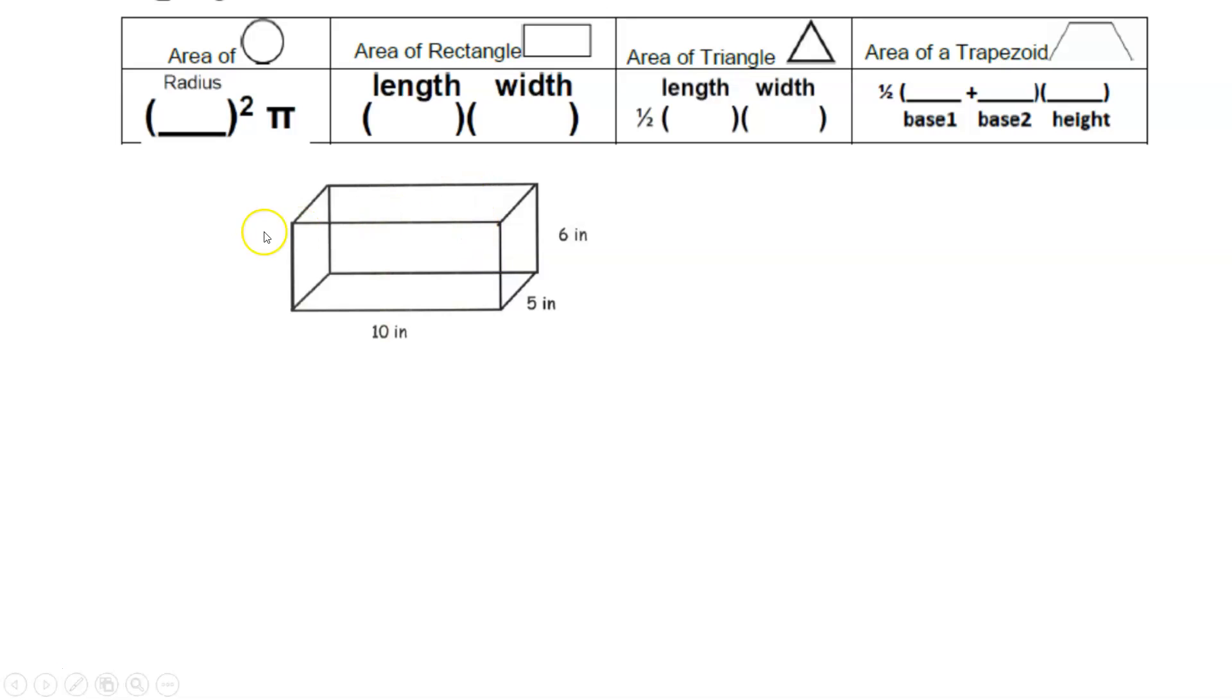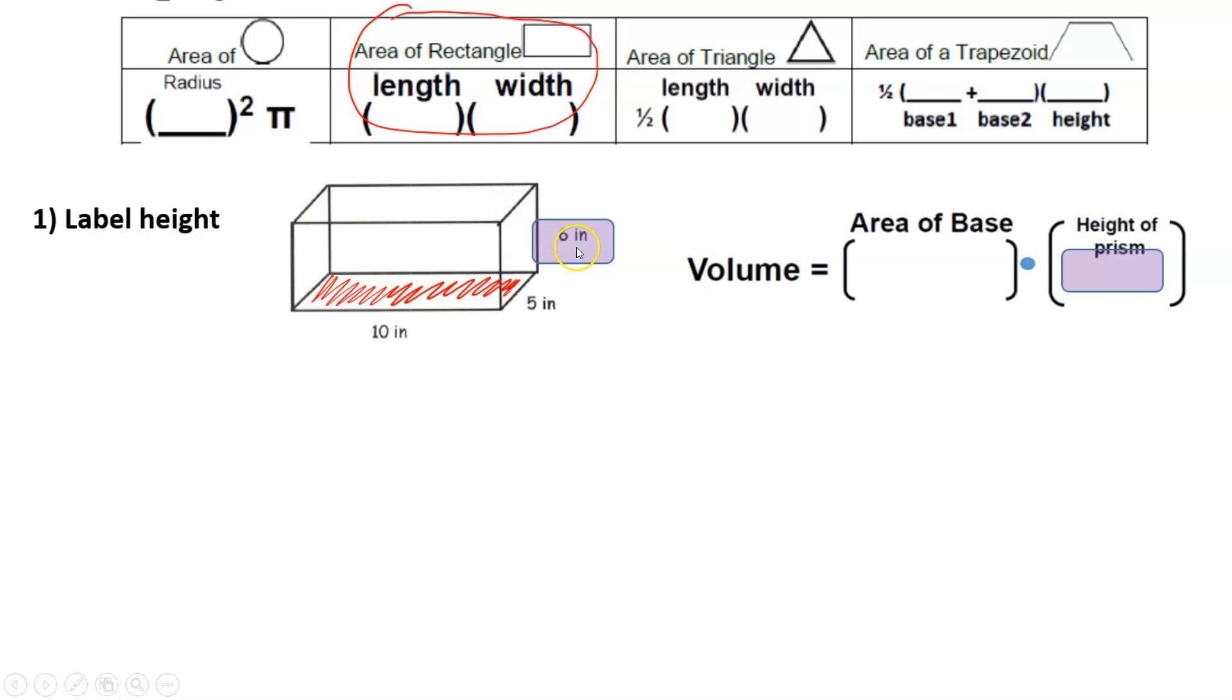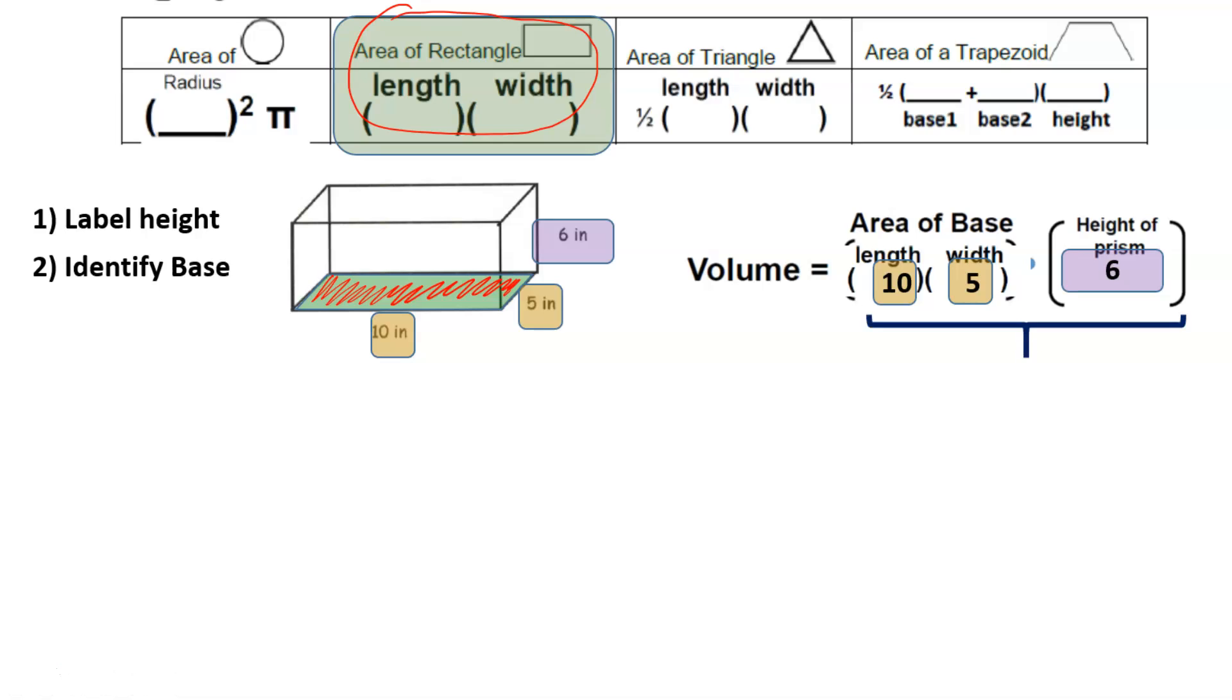Let's go on to the next one. Here we're going to identify first our base, so here we have a base on the very bottom that looks kind of like a rectangle. We're going to label our height, and since our base is the very bottom, 10 and 5, we're not going to use 10 or 5, we'll use 6 as our height. So we're going to go ahead and plug those numbers in, and compute 10 times 5 times 6. That would be 300.